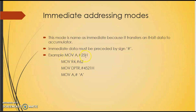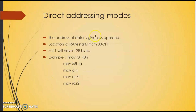Examples of immediate addressing mode: MOV A, #25H — here 25H is a constant value loaded into register A. MOV R4, #62 — 62 is a decimal value loaded into R4. MOV DPTR, #4521H — the value 4521H is loaded into the data pointer. MOV A, #0AH is another example.